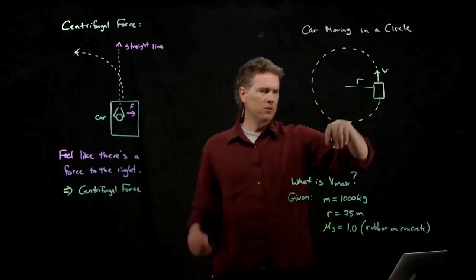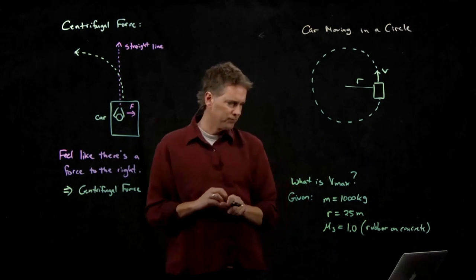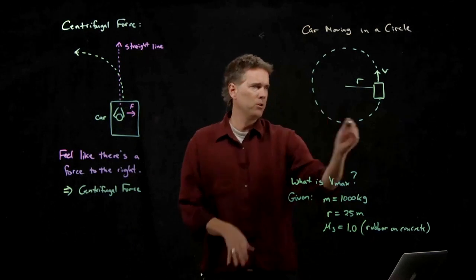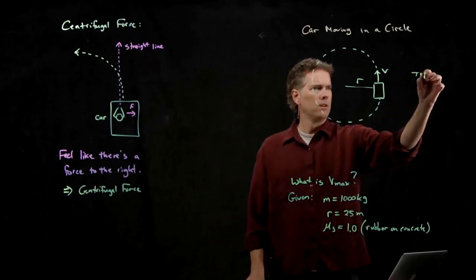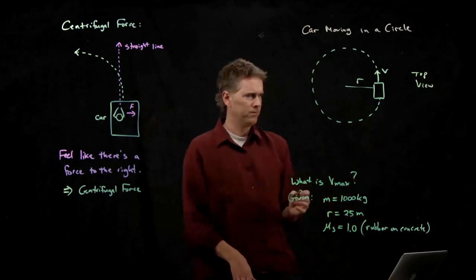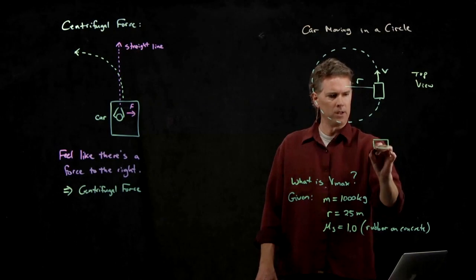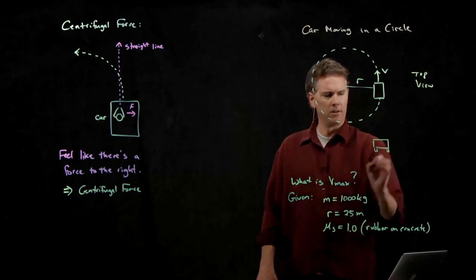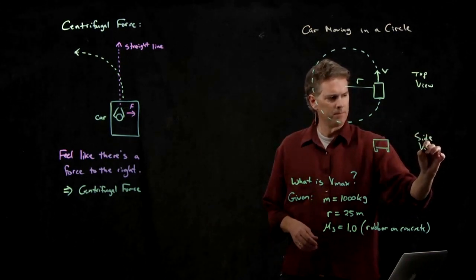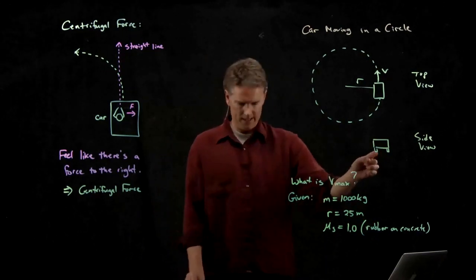So we're going to drive our car in a circle on the pavement, and we're going to see how fast we can go. These are the givens for the problem. This is the top view. Why don't we take a look at the side view? So the side view, the back of the car, is right there. There's the tires. And then there are some forces that are acting on this car. What forces are acting on the car?